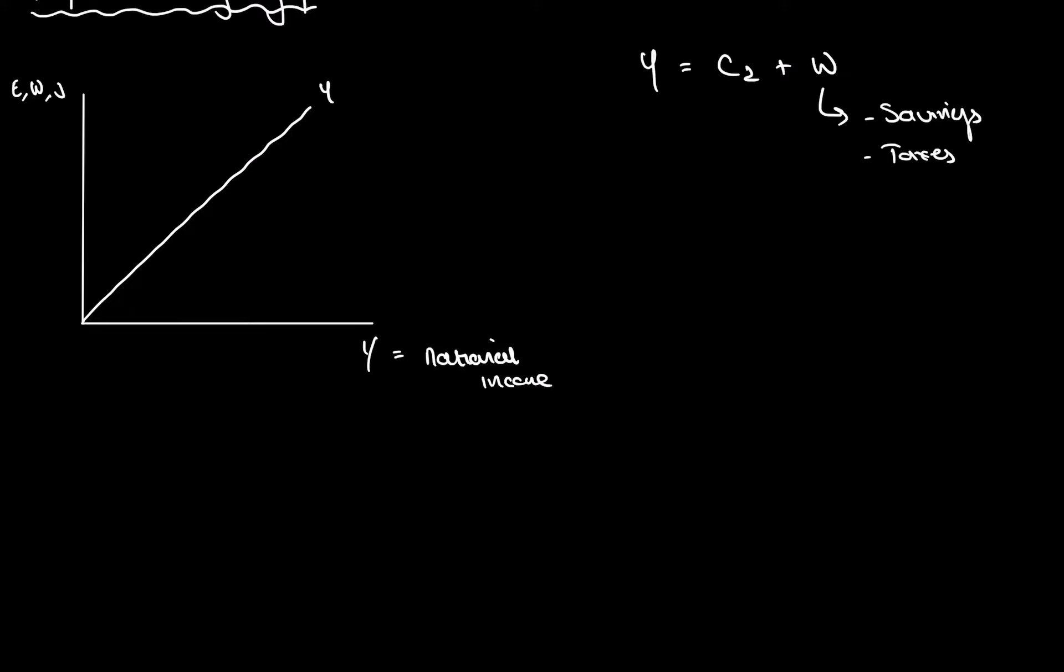and imports. So, that's why we have a 45 degrees line there. Next, what we have is the expenditure curve, also known as aggregate expenditure or aggregate demand. And this is also domestic consumption, but this includes injections.